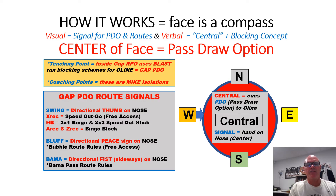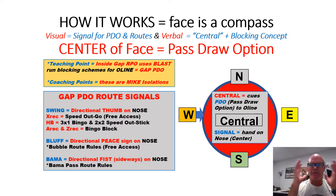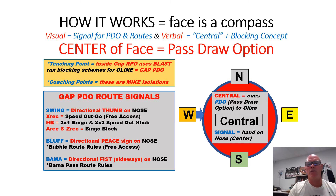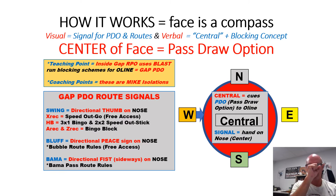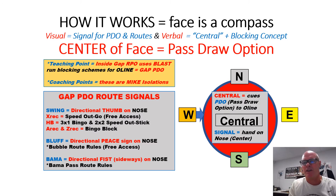Let's go over how this is going to work. This is part of our compass calls — we'll use the face as a compass for our signaling. For the pass-draw option series, signals are going to be at the middle of the face, at the center of the face. The verbal cue that the quarterback will give as a prefix to the play call is going to be 'central,' regardless of the signal.